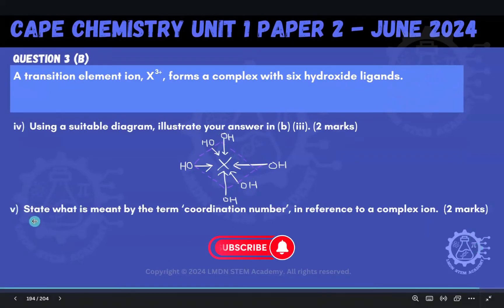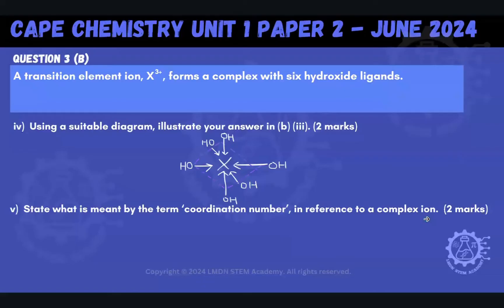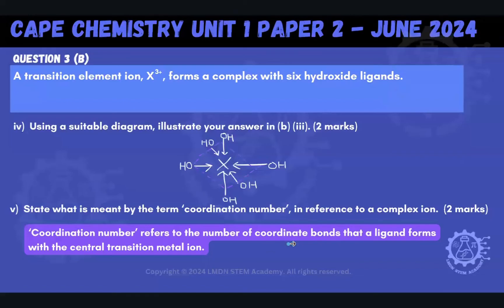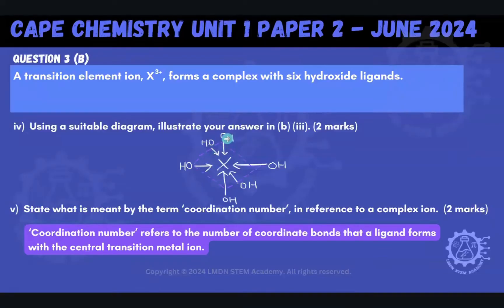The next part asks us to state what is meant by the term coordination number in reference to a complex ion. Coordination number refers to the number of coordinate bonds that the ligands form with the central transition metal ion. That's why we show these arrows — it's forming dative coordinate bonds with the metal ion. In this case there are six of them, so the coordination number is six.